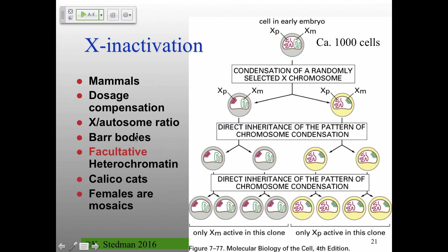This is called facultative heterochromatin. Facultative means sometimes one kind of chromatin, as opposed to constitutive, which is always one kind. This process does get reversed — if you think about the germline of a female becoming eggs, those X chromosomes have to be reactivated later. So it's not a permanent state; it's a facultative heterochromatin process. The classic example is the calico cat with different coloration.